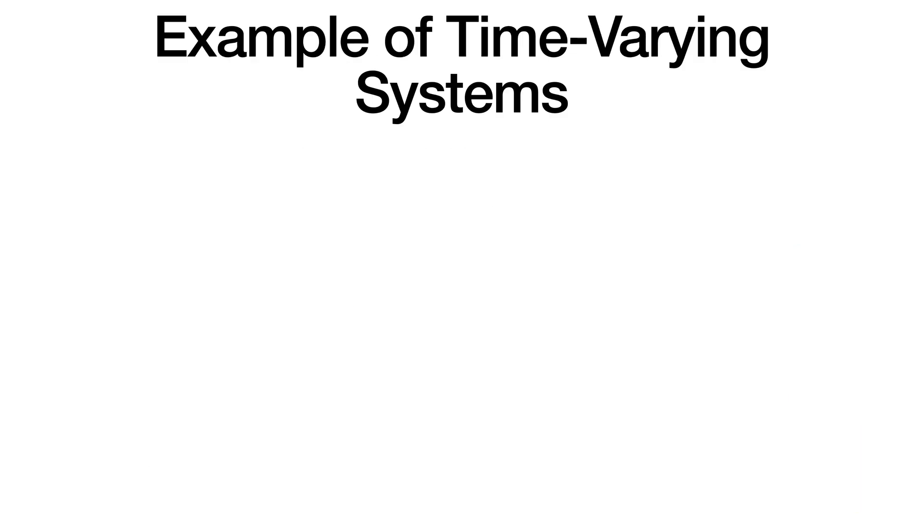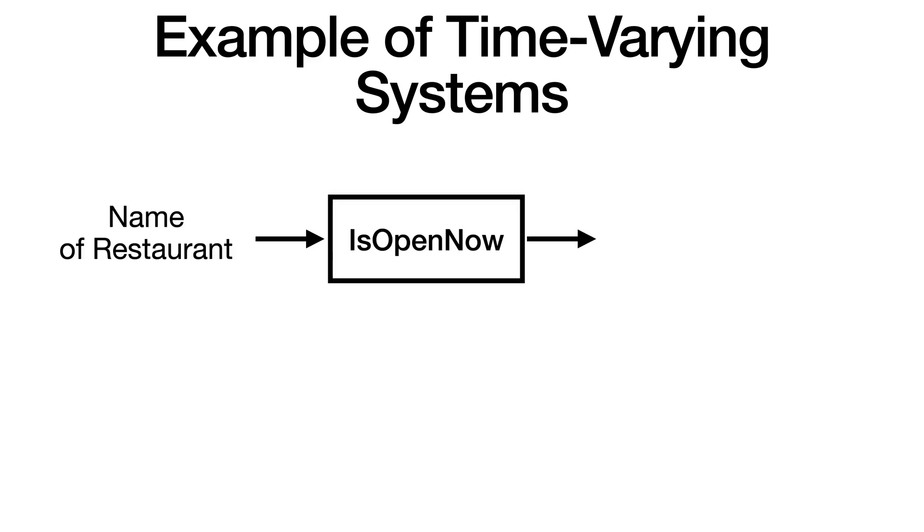There are examples of systems, however, that are not time-invariant. Consider a system that takes in the name of a restaurant and outputs whether the restaurant is currently open. This system depends on the time we put in the name of the restaurant, so it is time-varying. So you have the same input with different outputs.